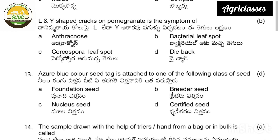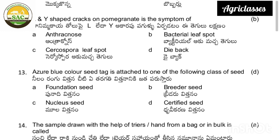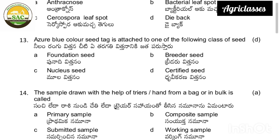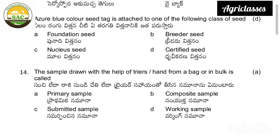Azure blue colored seed tag is attached to which class of seed — foundation, breeder, nucleus, or certified? The correct answer is certified seed. The sample drawn with the help of triers or by hand from a bag in bulk is called a primary, composite, submitted, or working sample.